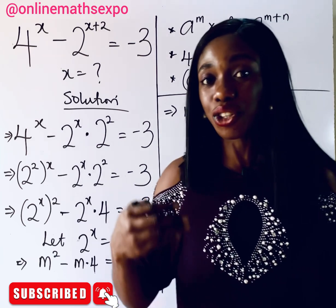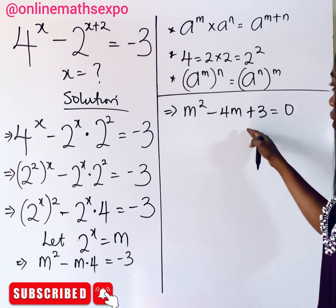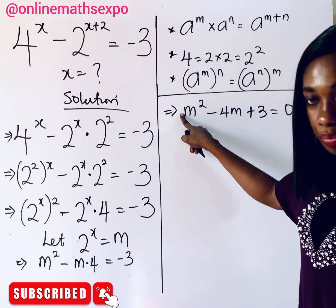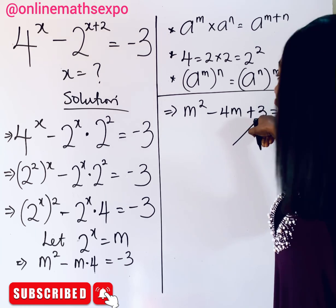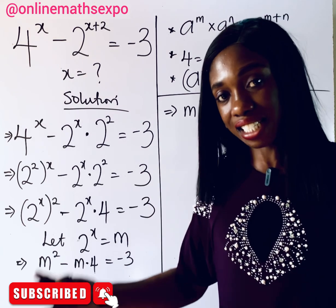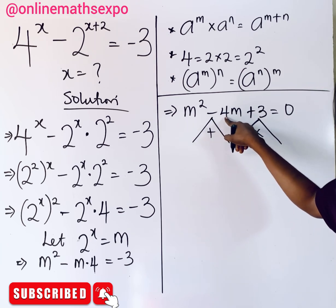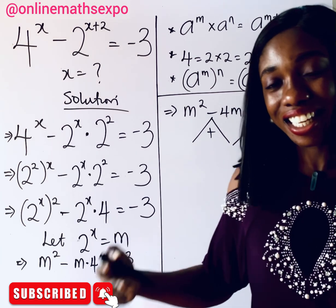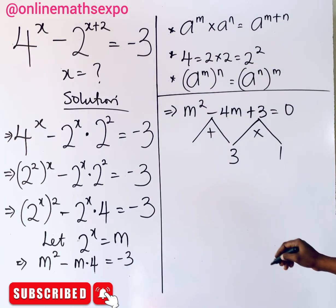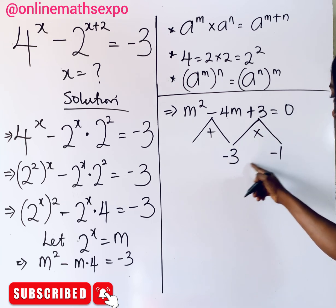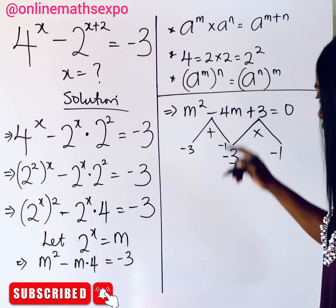I'm going to use the factoring method. The coefficient of m squared is 1, so we just need two numbers that when multiplied give the constant 3, and when added give negative 4. The factors of 3 are 3 and 1. For the signs, we choose negative 3 and negative 1, because multiplying them gives positive 3, and adding them gives negative 4.